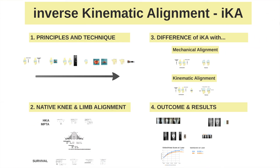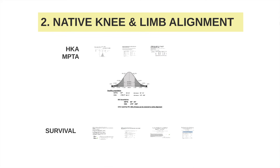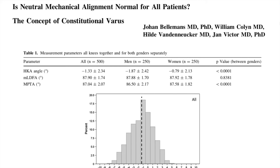We continue with the native knee and native limb alignment. Every knee is unique and should be treated in a unique, patient-specific way. Last decade, many papers were published describing the native alignment of the knee. Johan Pellemans and Jan Viktor published in 2012 on the constitutional varus, showing the mean HKA angle in a Caucasian population is not 180 degrees but somewhere between 178 and 179, with high inter-individual variability. For the MPTA, the mean is around 87 degrees, and the variability is also high.